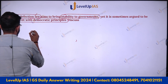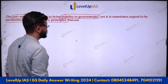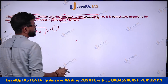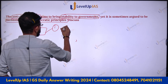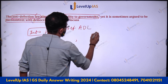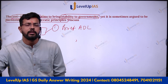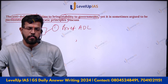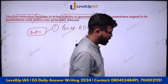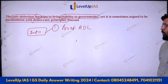For the introduction, there can be two types. The first is a brief introduction giving a brief idea about anti-defection law — you can write that anti-defection law was introduced under the 52nd Constitutional Amendment Act, 1985, with the aim to bring stability to the government.